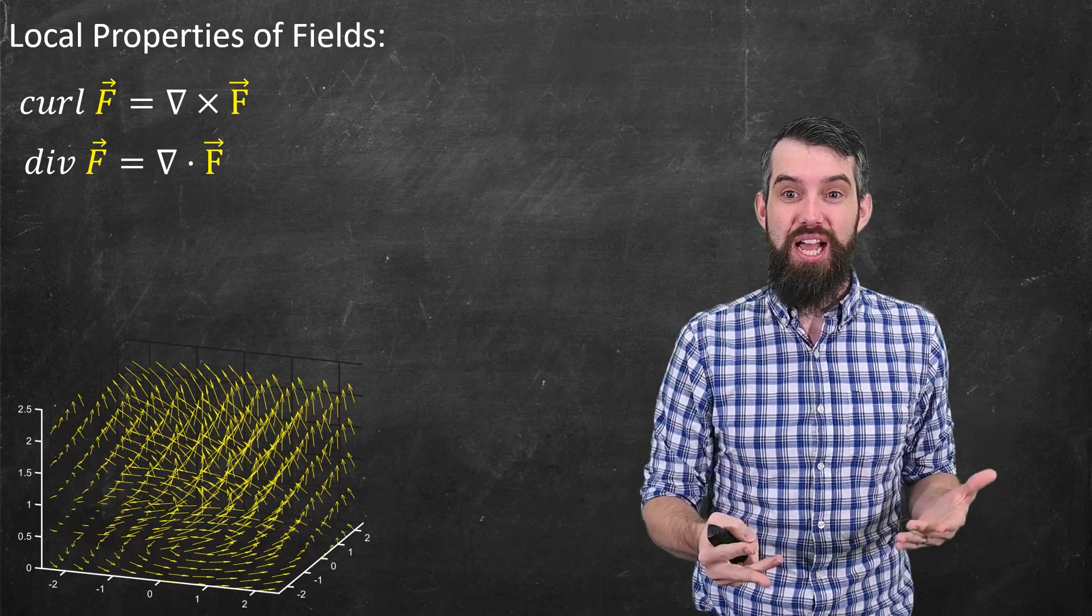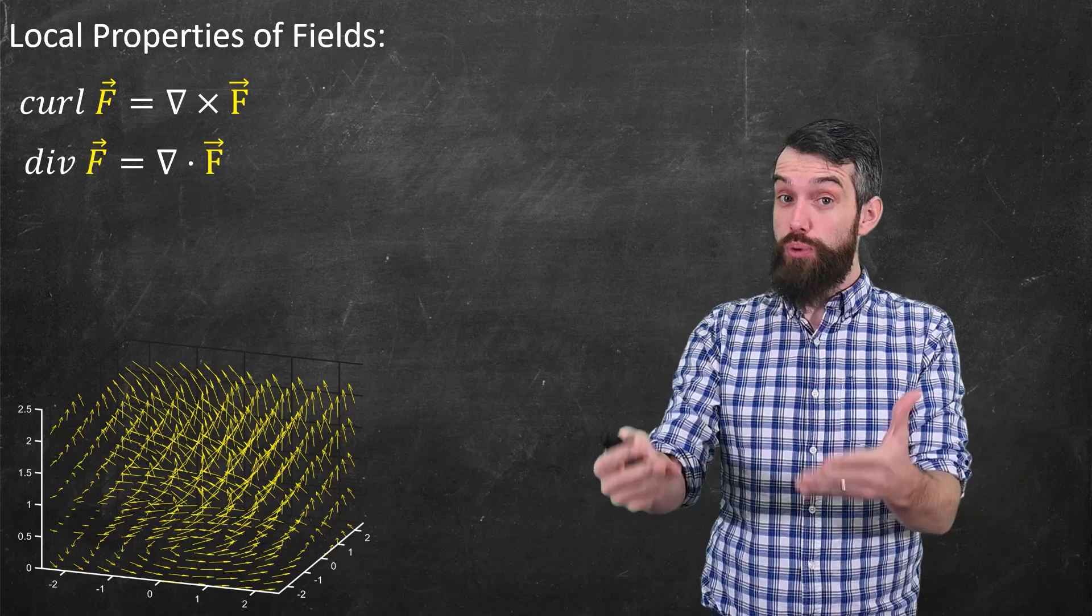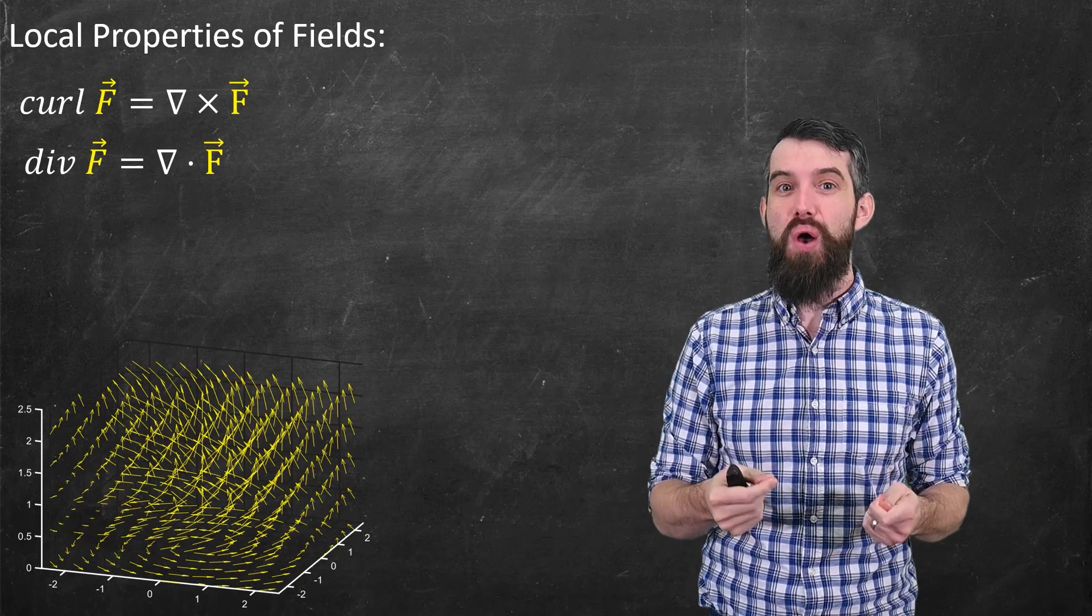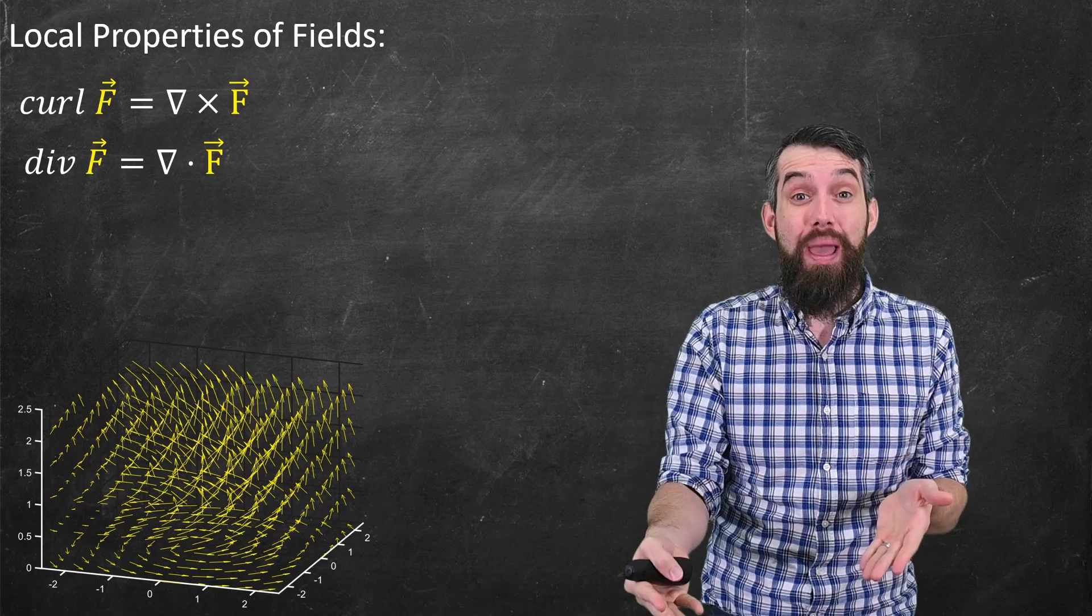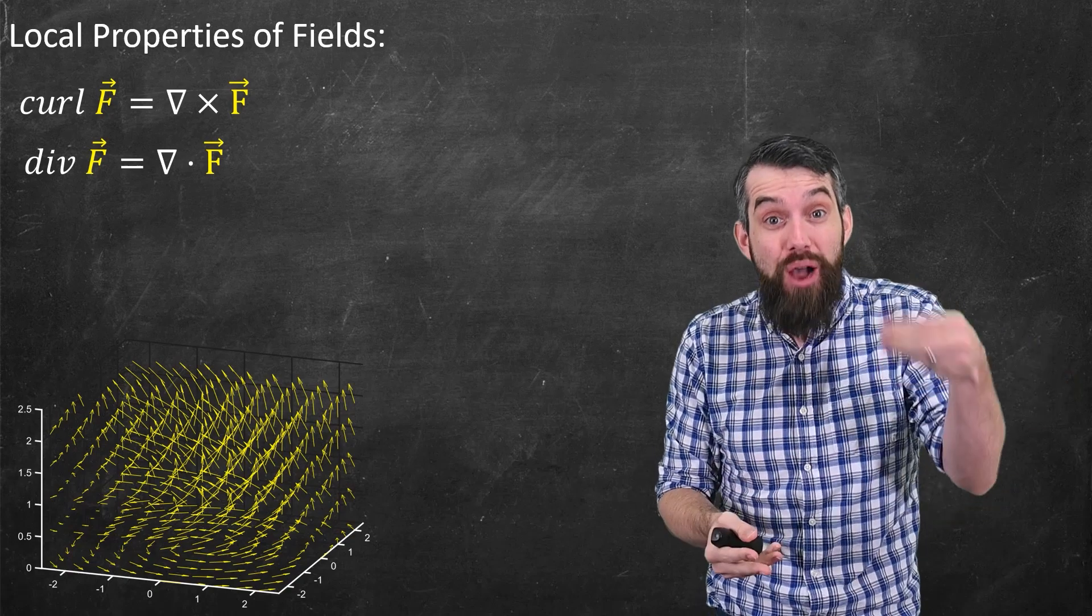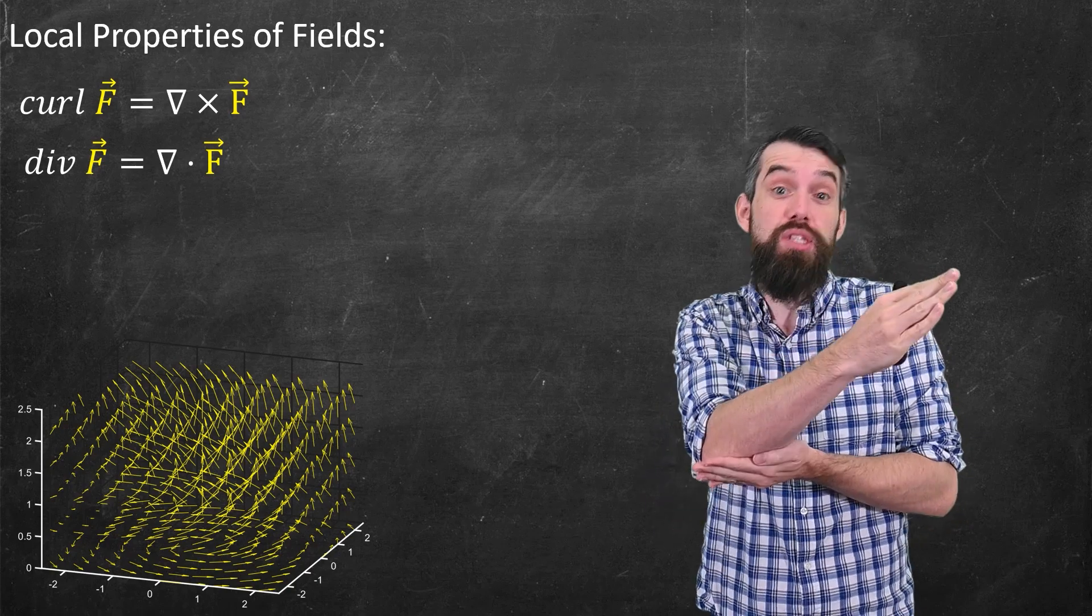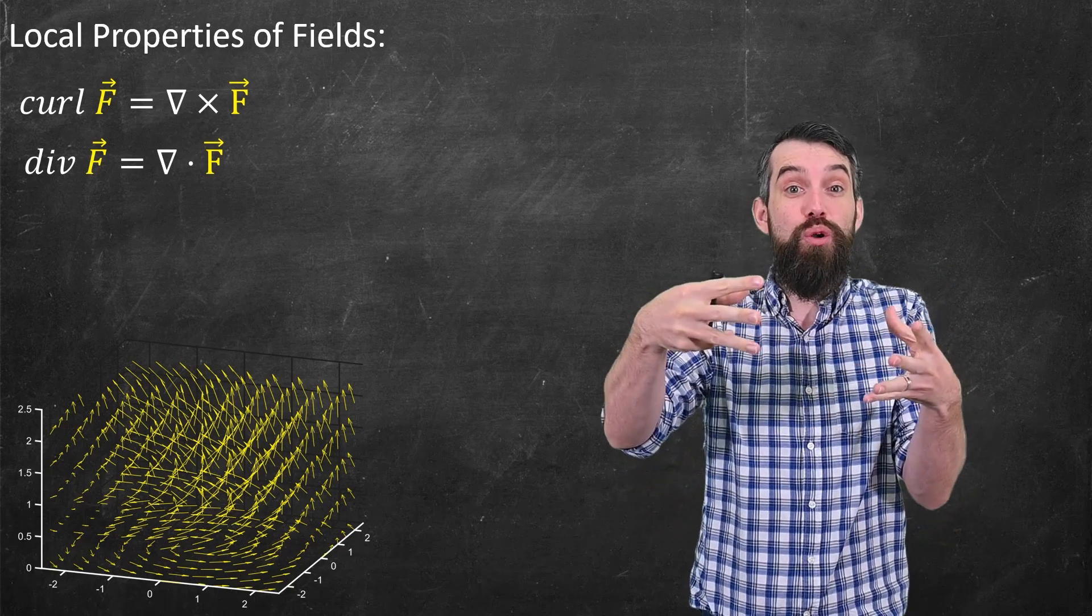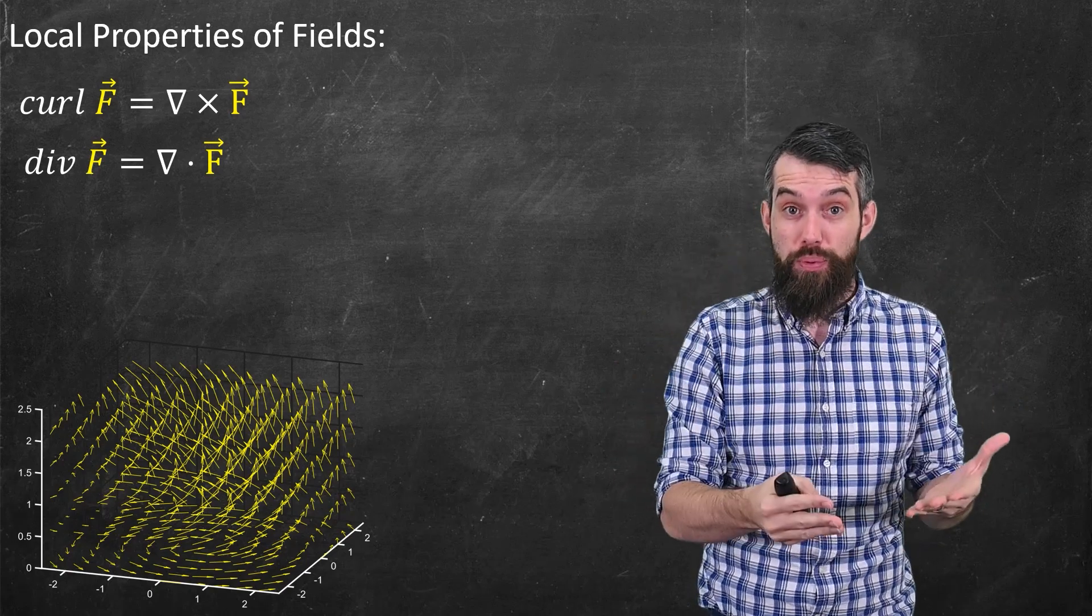So the first thing to talk about if I have a vector field like this one is that there are two local properties of a vector field we've talked about: the curl and the divergence. What I mean when I call these a local property is at any single point in the domain, you can compute out the curl and you can compute out the divergence. It's something that is true around a specific point.